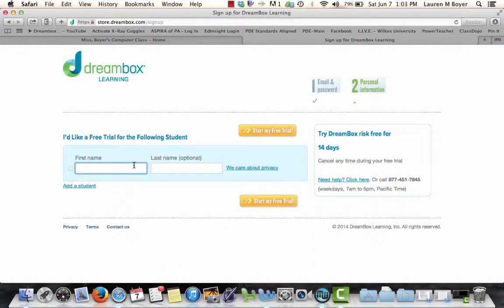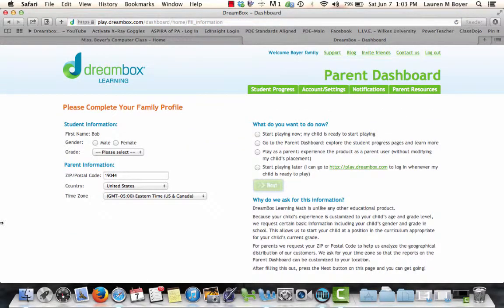So let's say my student's name is Bob Smith. I type his name. I click start my free trial or start this student. I have to tell the computer that Bob is male and we're going to say Bob's a sixth grader.